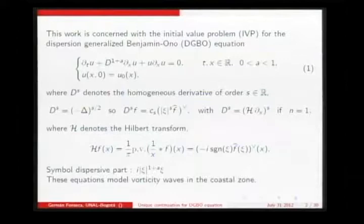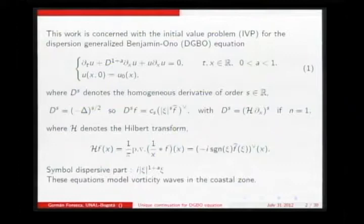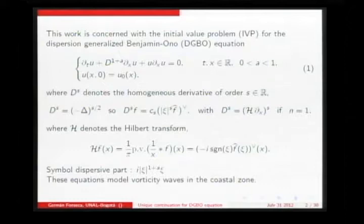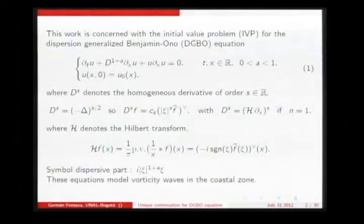The dispersion generalized Benjamin-Ono equation has a non-local derivative given by D, the homogeneous derivative D to 1 plus A times the local derivative, partial derivative with respect to X. In Fourier transform, we have the symbol for the dispersive part being this non-smooth expression.